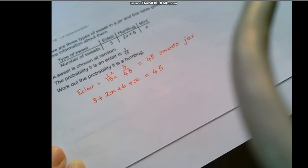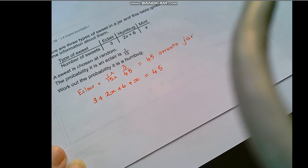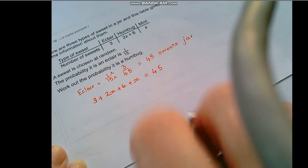Okay so therefore the information we're given is that we have three eclairs plus 2x plus 6 humbugs and plus x mints and that must all add up to 45. So there we have an equation that we can gather terms.